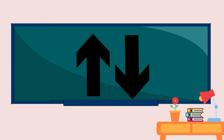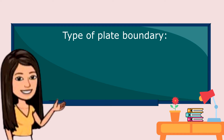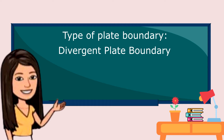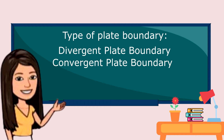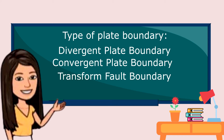If we draw arrows for the transform fault boundary, how do the arrows look? The three types of plate boundaries are: divergent plate boundary, convergent plate boundary, and transform fault boundary.